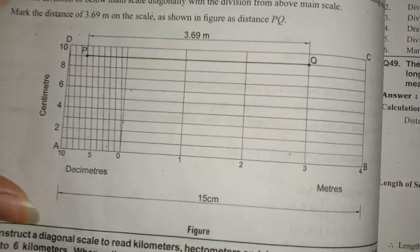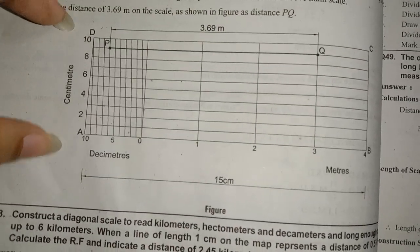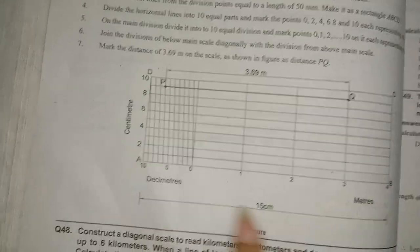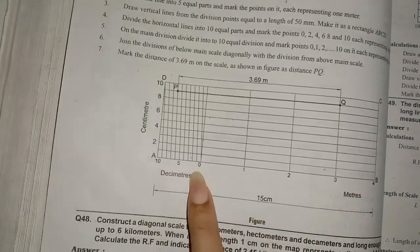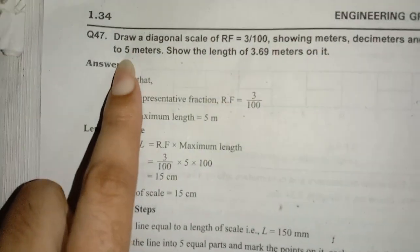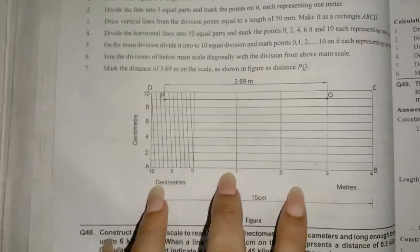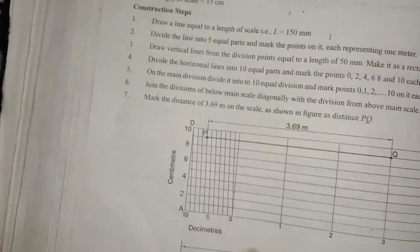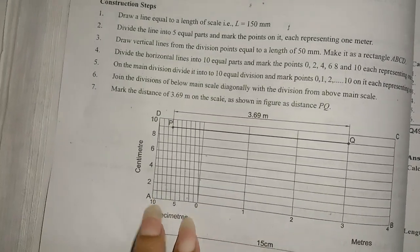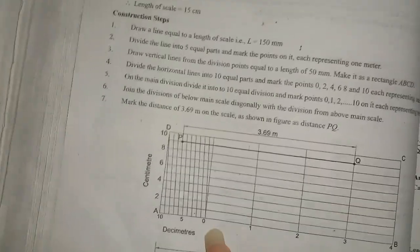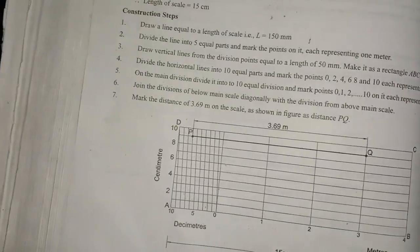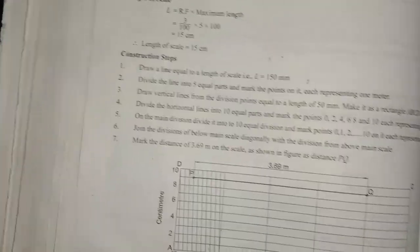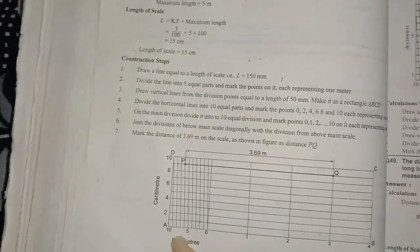Let's look at the first one: 5 equal parts. Let's look at the maximum distance and 5 equal parts. The length of the scale is 15. Let's look at the length of the scale and the 5 equal parts.